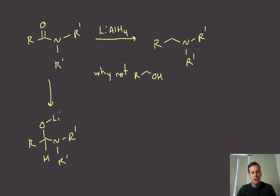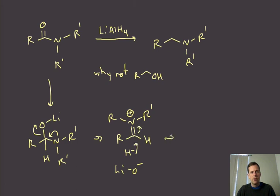So instead, what can happen - and this is by virtue of the fact that the lithium-oxygen bond is relatively covalent - instead, what we can do is actually kick out the other way. We can spit out the oxygen, which is then going to give us our iminium ion there, and we're spitting off lithium hydroxide. And now we can add the second hydride equivalent to reduce down that amine.